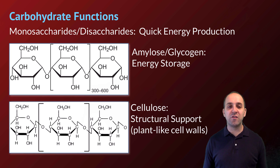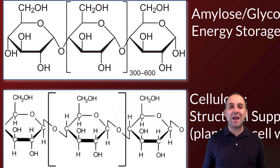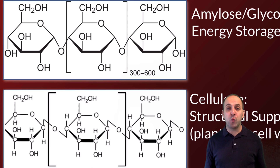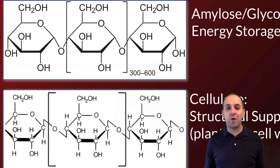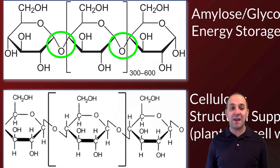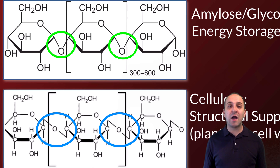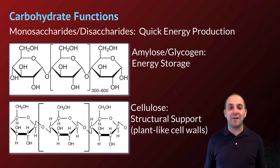Looking at enlarged subsections of cellulose and glycogen, notice there's actually no difference between the monomers themselves — the difference is in the connections between monomers, called glycosidic bonds. The energy storage polysaccharides amylose and glycogen are connected by one type of glycosidic bond, whereas cellulose is connected by a different type, and this makes all the difference in whether our enzymes can break them down.